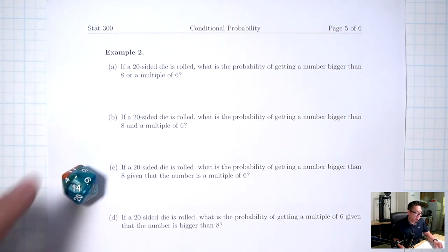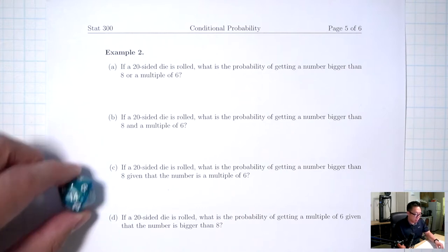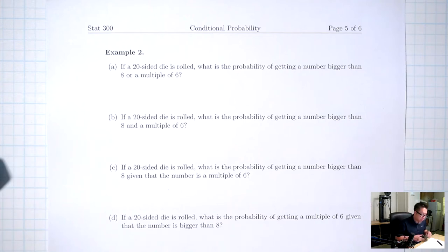Part A: if a 20-sided die is rolled, what's the probability of getting a number bigger than 8 or a multiple of 6? When I roll this die, what are all the numbers I can get? I can get a 1, 2, 3, 4, all the way up to 20, because it's a 20-sided die.